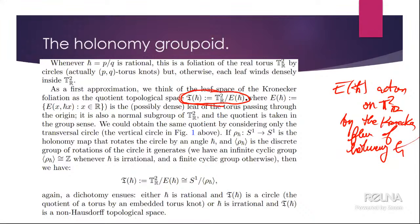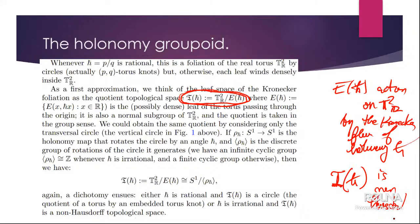Because every leaf is dense, this space T_{H-bar} is non-Hausdorff — it's just a quotient space. Because this space is non-Hausdorff, it's not a very good moduli space for the leaves of the foliation. I would like a space where every point is one of the leaves of the foliation, but it's a non-Hausdorff space.